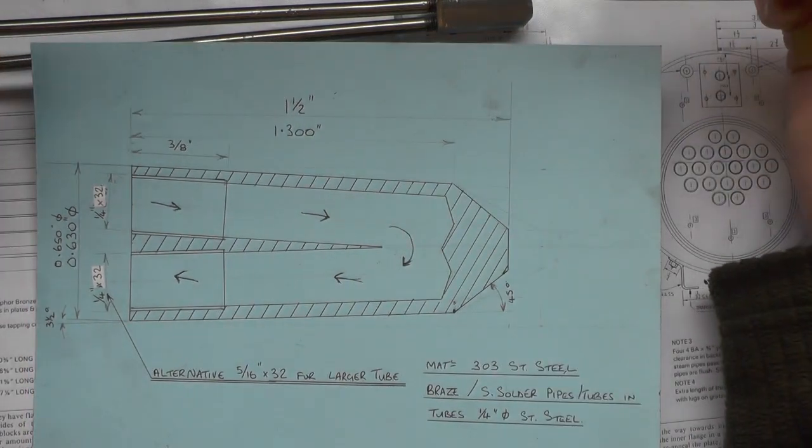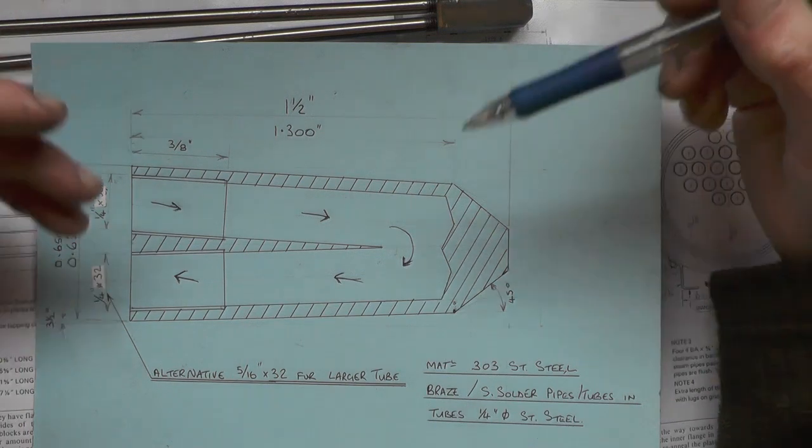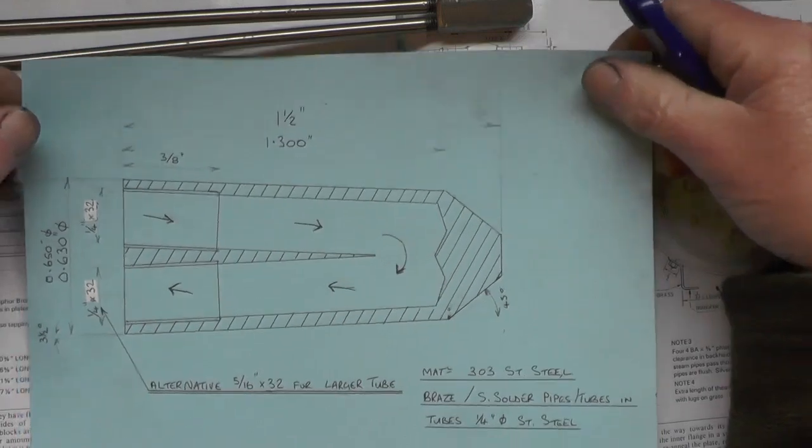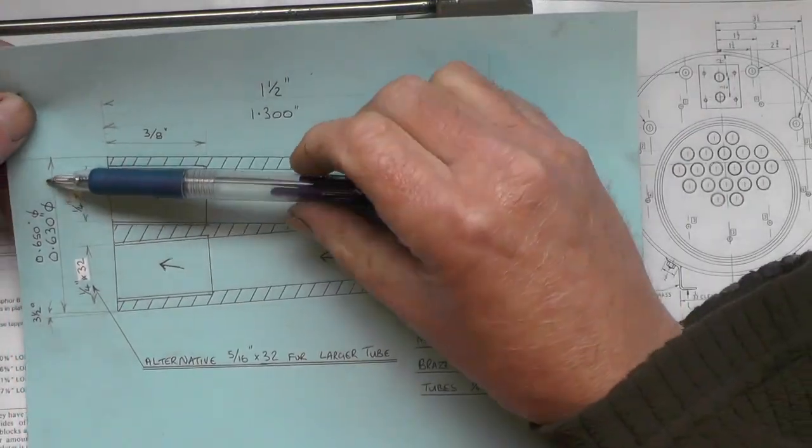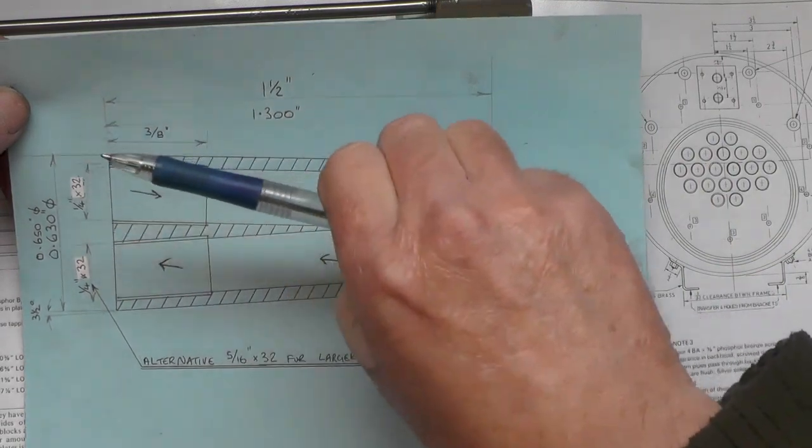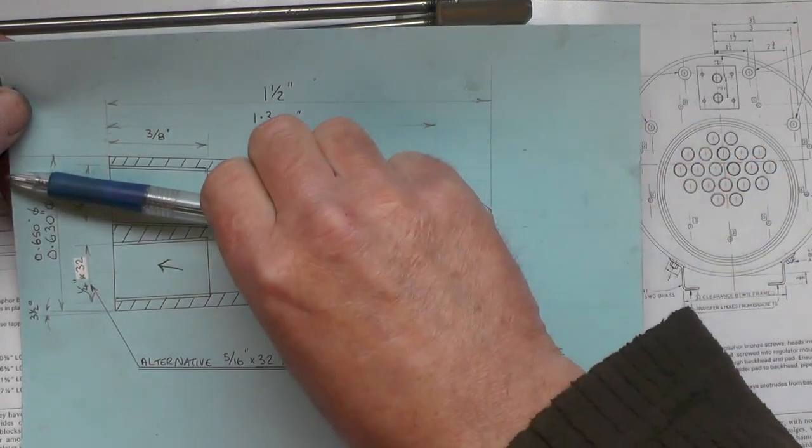Because everything's a tight squeeze up the boiler tubes, all the dimensions have got to be spot on or it's not going to work out. I'm going to drill, or I have drilled, at three and a half degrees in the end of this 303 stainless hexagon solid.